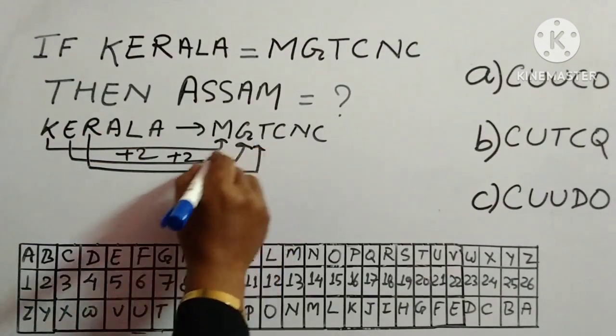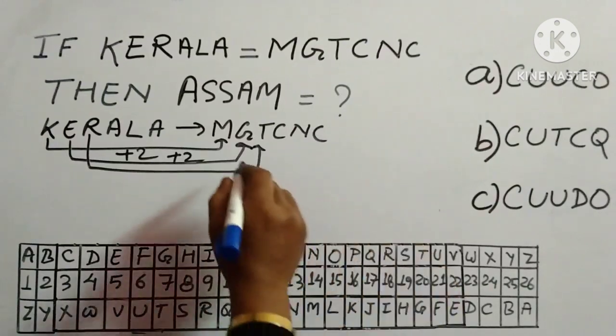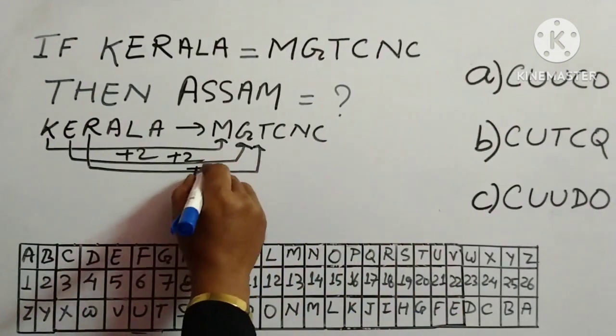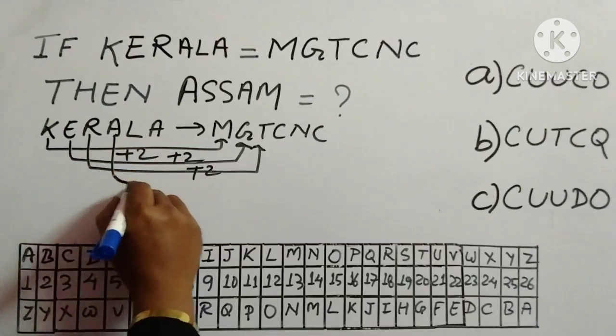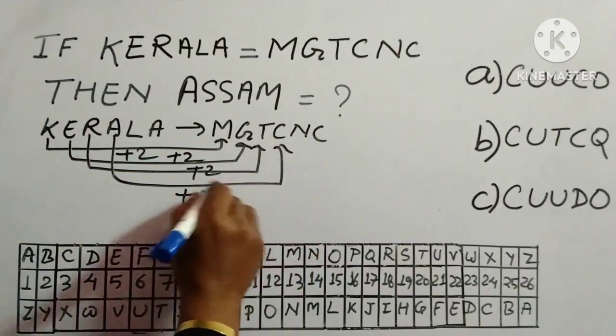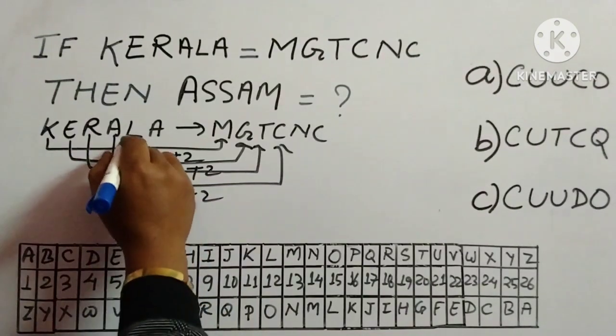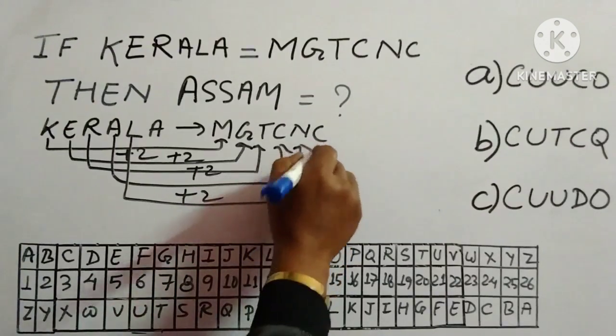R, then 2. Where is R? R is over here, then S and T. So we are shifting two alphabets. Again, A and then we have C. So plus 2 after A, B, C.